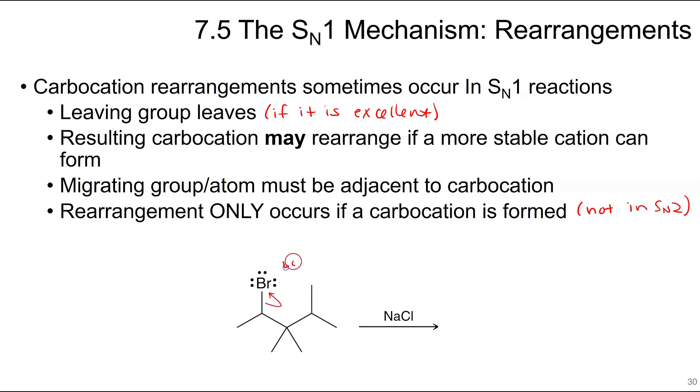So in this reaction, we have loss of leaving group, which forms the carbocation. So if I look at the adjacent atoms, here's an H here. If I move this H over to this carbon, that H gets moved here and the carbocation is here. This one is primary, this one is secondary, this is not more stable. The carbon next to it has methyl groups. If I take this whole methyl group and shift that here, that carbocation moves here. This is tertiary, which is more stable.